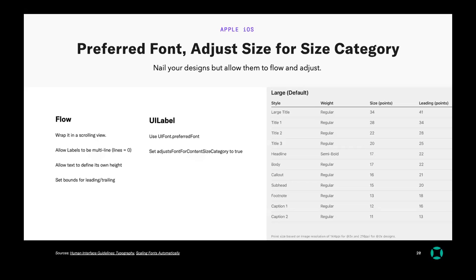One of the other ideas of flow is using the scroll view. Some idiomatic things for iOS would be: allow labels to go multi-line, which is setting numberOfLines to zero, and allow text to define its own height so as not to cut off any descenders or parts of the font. Also set bounds of the screen not only for leading and trailing, but also to account for the notch and the bottom of the device.